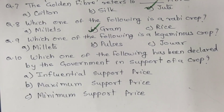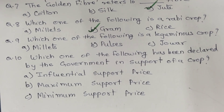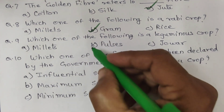Question 9. Which one of the following is a leguminous crop? A. Millets. B. Pulses. C. Jowar. And the correct answer is B. Pulses.